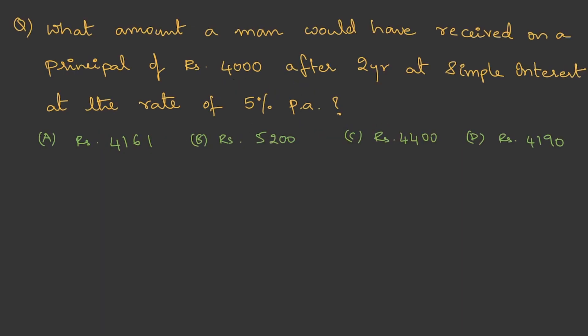What amount would a man have received on a principal of Rs. 4000 after 2 years at simple interest at the rate of 5% per annum? To solve this, let me write the given data. The principal is Rs. 4000, time is 2 years, the rate is 5% per annum, and we are supposed to calculate the amount.